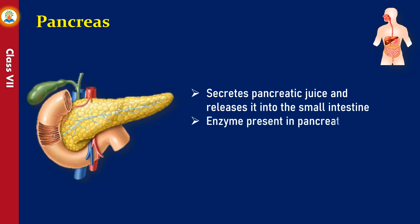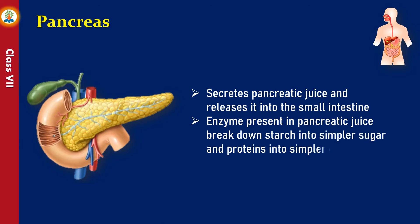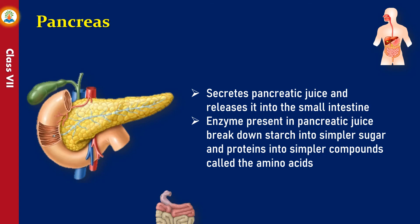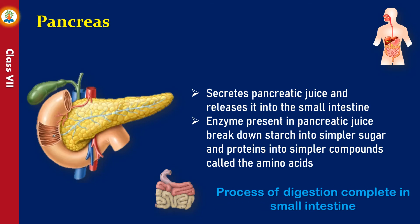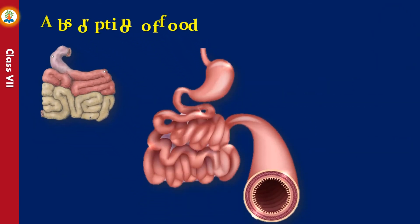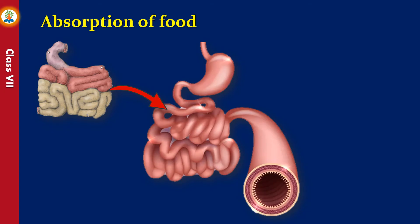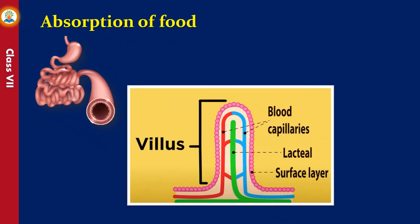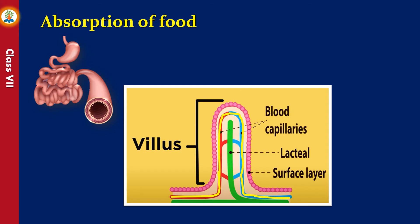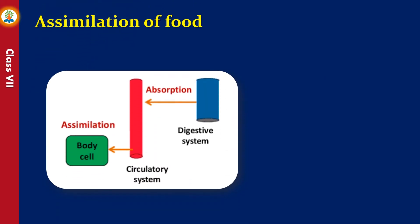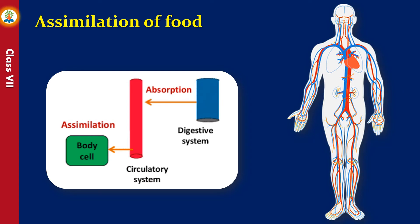The enzymes present in pancreatic juice break down starch into simpler sugars and proteins into simpler compounds called amino acids. The process of digestion is completed in the small intestine. After complete digestion, soluble food is absorbed through minute finger-like projections called villi (singular: villus), present on the inner lining of the small intestine. The villi are richly supplied with blood capillaries, which increase the surface area for absorption. The digested food particles are absorbed through blood vessels in the villi and carried to different parts of the body through the circulatory system for energy production or storage.